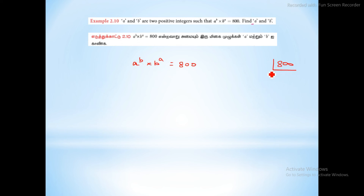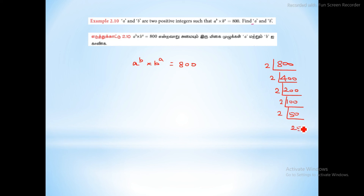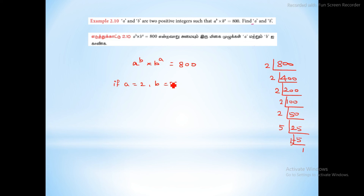Factorizing 800: 800 equals 2 into 400, 400 equals 2 into 200, 200 equals 2 into 100, 100 equals 2 into 50, 50 equals 2 into 25, and 25 equals 5 into 5. So 2 appears 5 times and 5 appears 2 times. If a equals 2 then b equals 5. That is the first case.